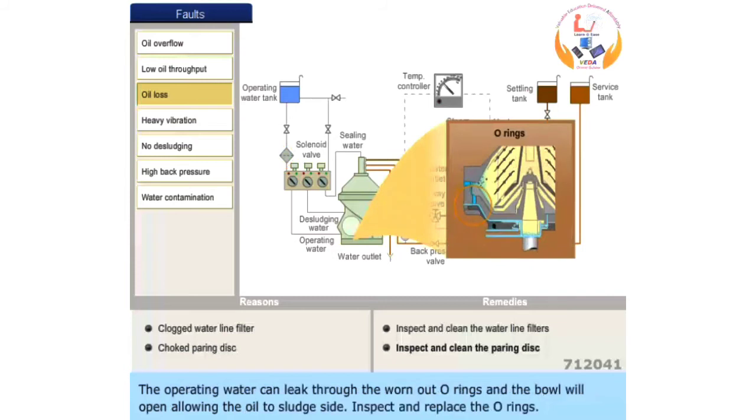The operating water can leak through the worn-out O-rings and the bowl will open, allowing the oil to sludge side. Inspect and replace the O-rings.